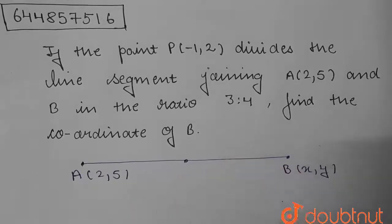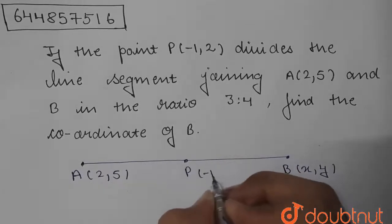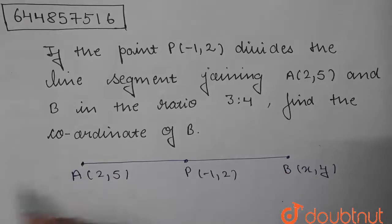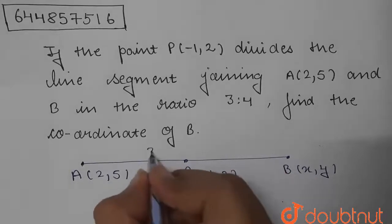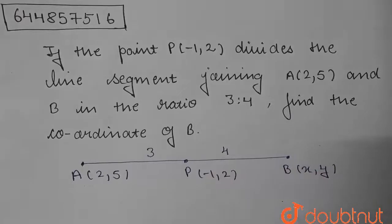We have a point here which is P(-1, 2), and that is dividing this line segment in the ratio 3:4. So we need to find the coordinates of B. In this question, we're going to use the section formula.